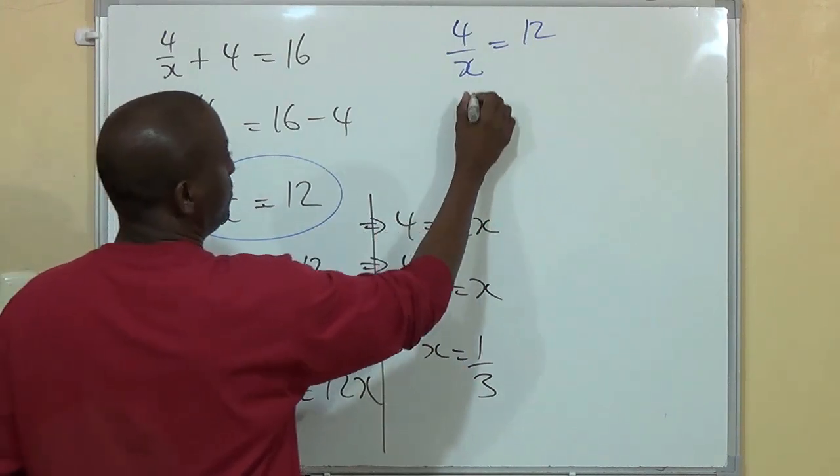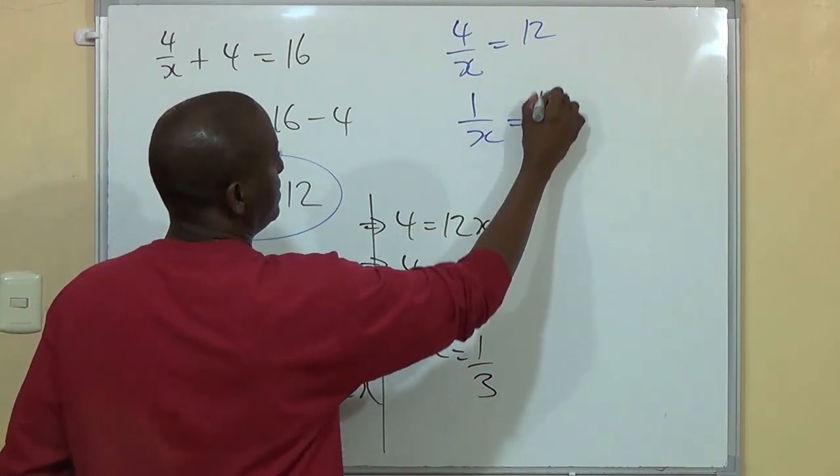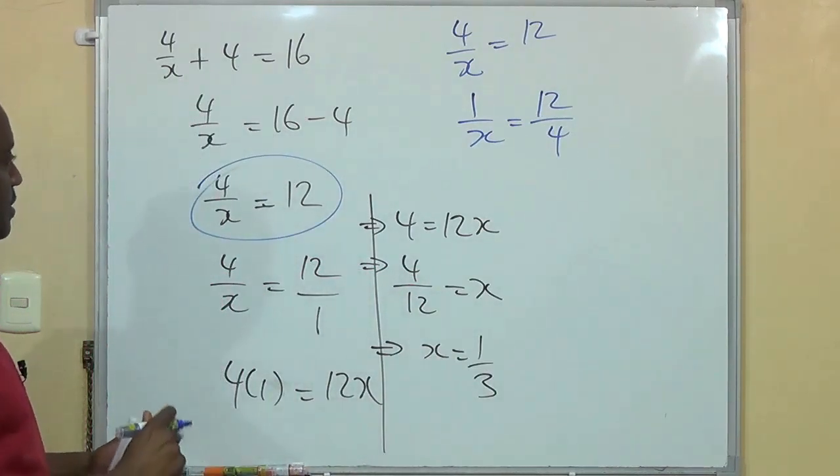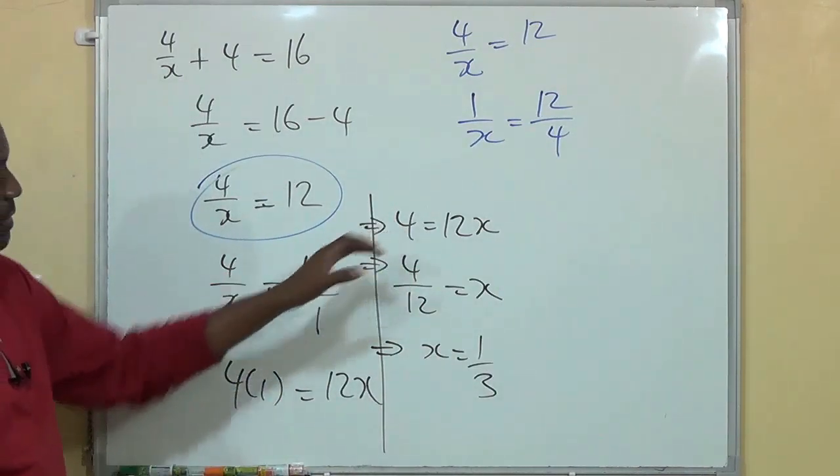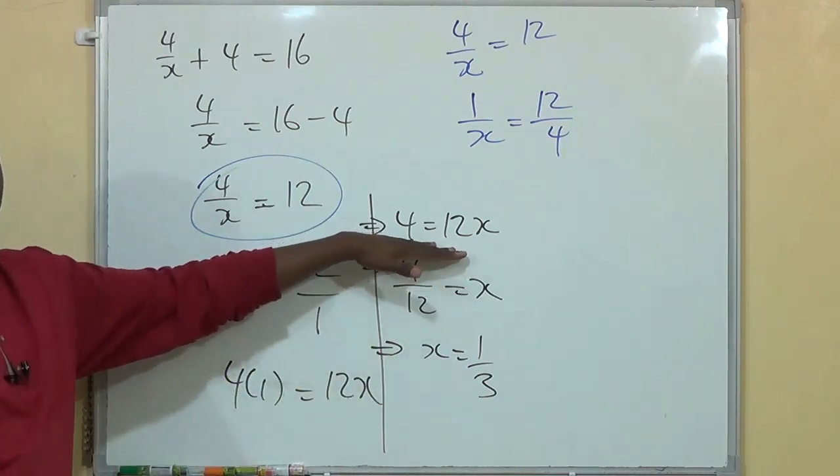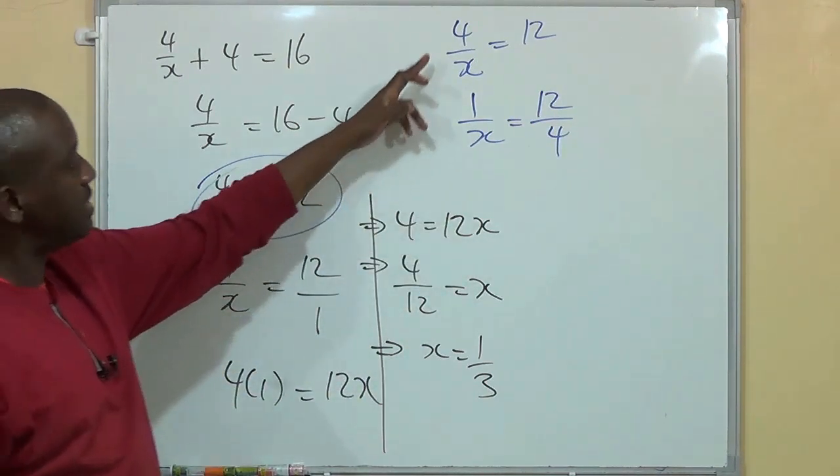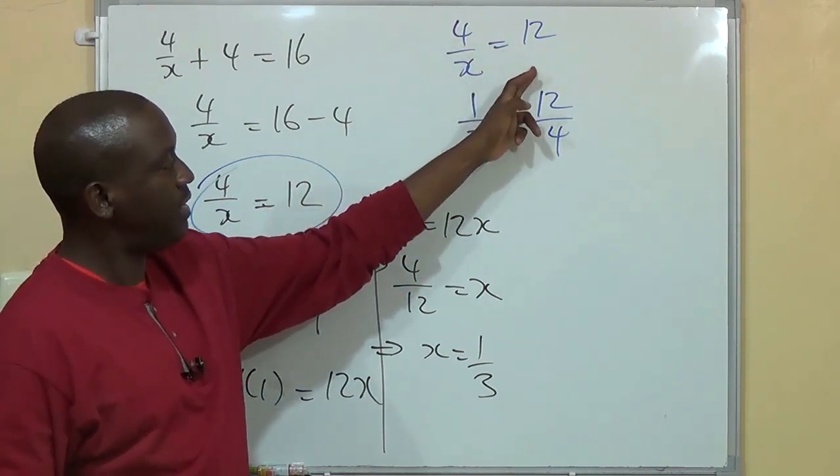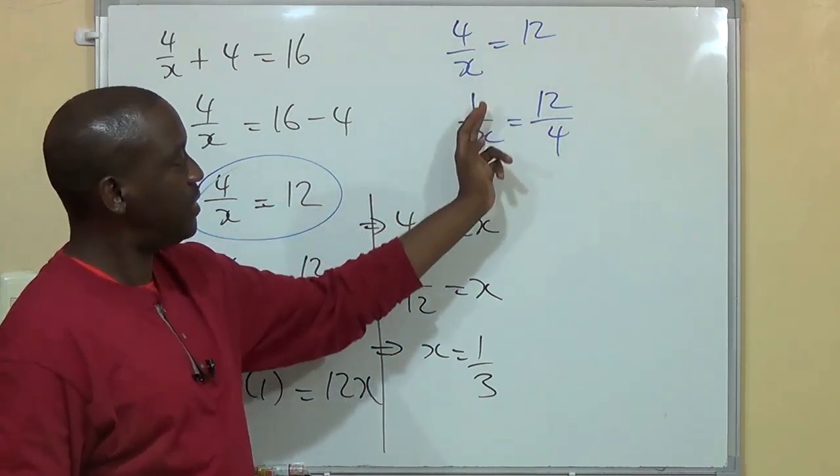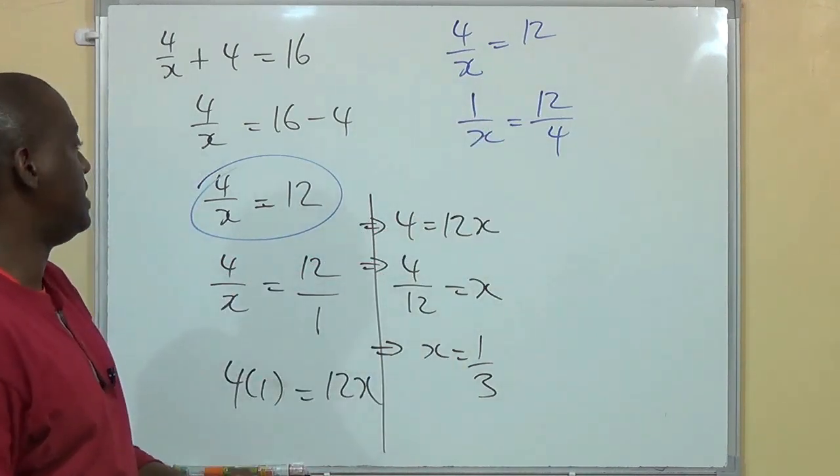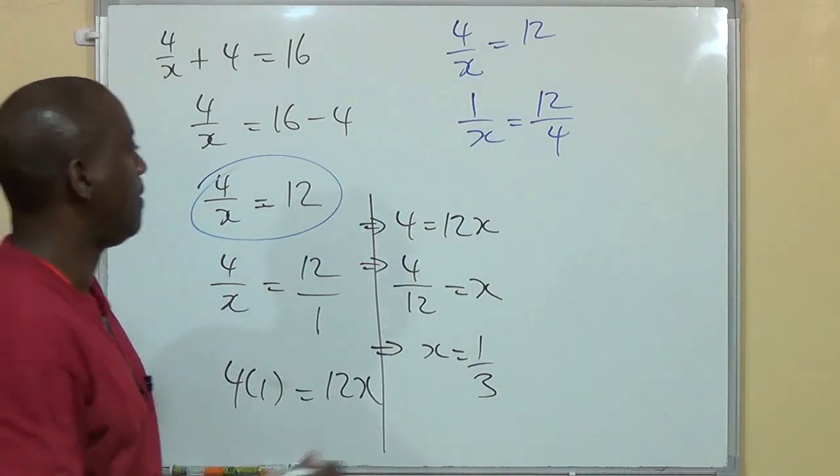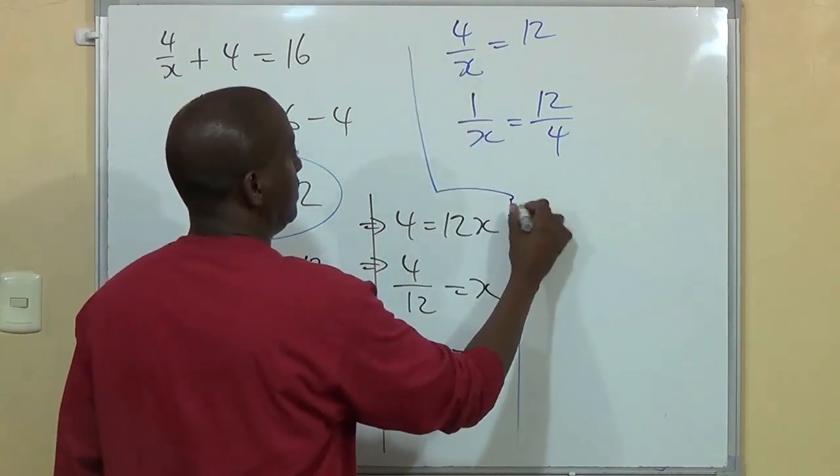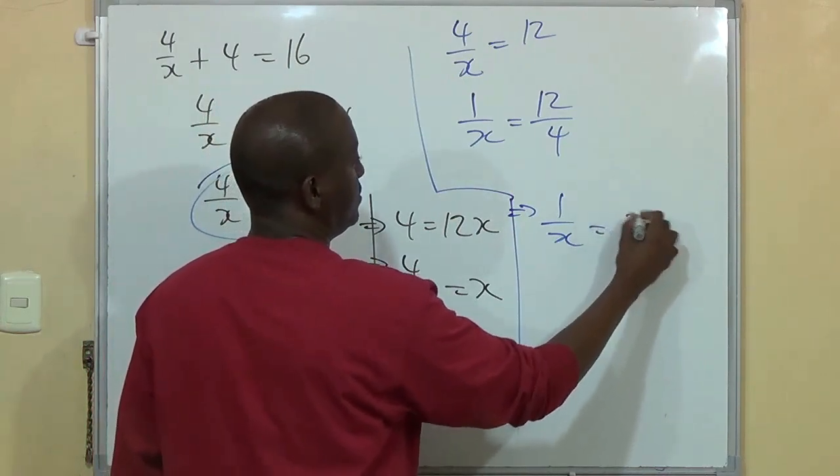So I could say 1 over x is equal to 12 over 4. So instead of multiplying the two across to remove all the denominators, which is your traditional cross-multiplication, I could just cross-multiply on one side alone. Take this 4 and carry it across here. So I'll get 1 over x is equal to 12 over 4, which is to say then that 1 over x is equal to 12 over 4 is 3.